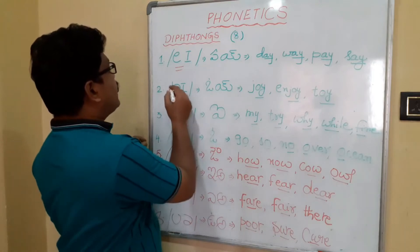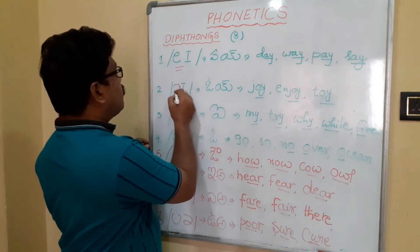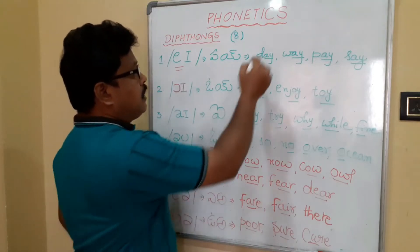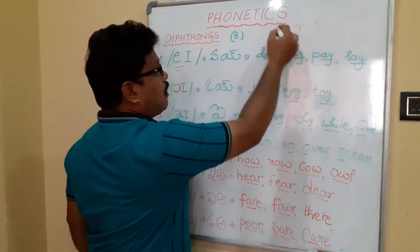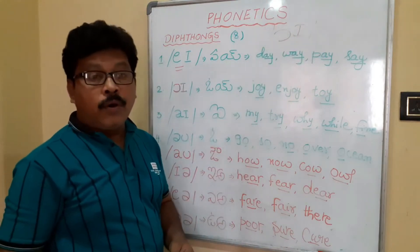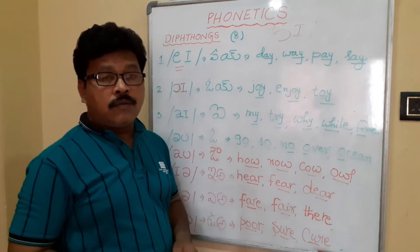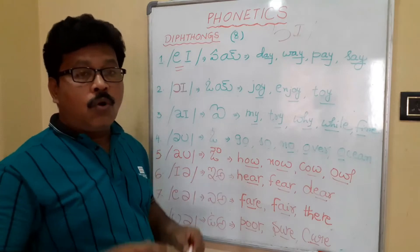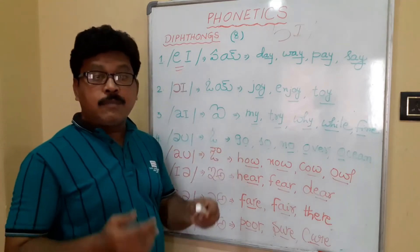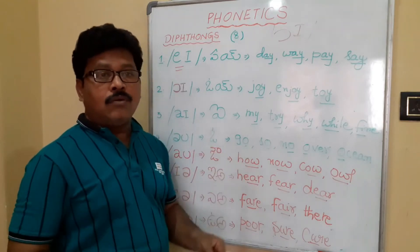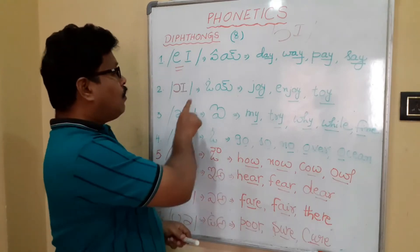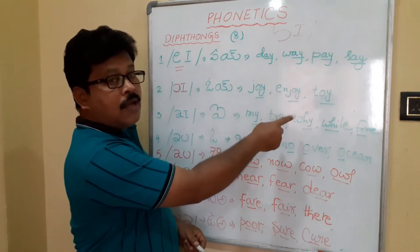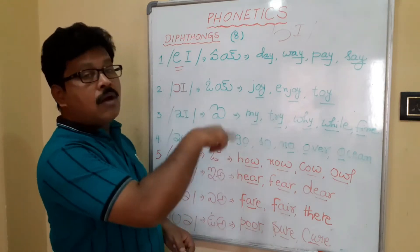The second diphthong: if you write inverse C and I, this is called the /ɔɪ/ (Oye) sound. Usually in the northern part of our country — North India, especially in Punjab — how do you call a person? 'Oye, come here.' Examples: joy, toy, enjoy. This is the symbol for the /ɔɪ/ sound.